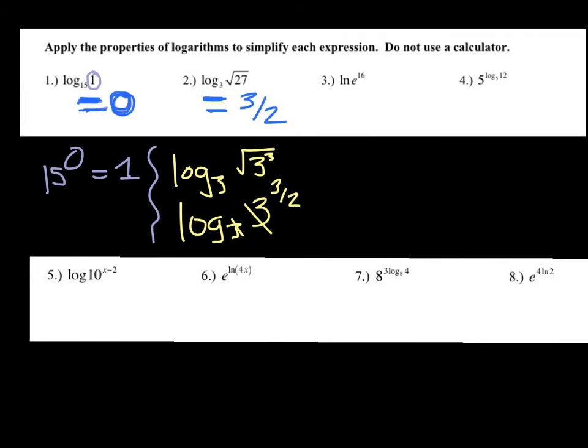Number three: ln of e to the 16. Because e is the argument of your natural log, they undo each other, and you're left with just 16.